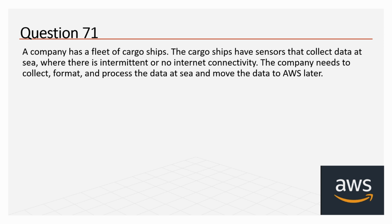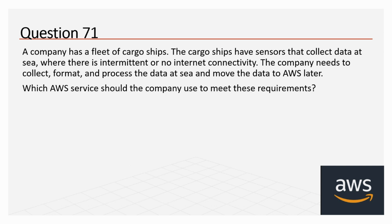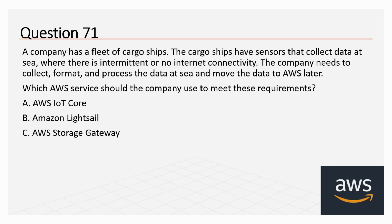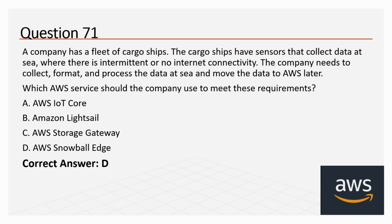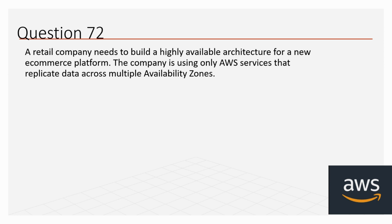Question 71: A company has a fleet of cargo ships. The cargo ships have sensors that collect data at sea where there is intermittent or no internet connectivity. The company needs to collect, format, and process the data at sea and move the data to AWS later. Options: A: AWS IoT Core, B: Amazon Lightsail, C: AWS Storage Gateway, D: AWS Snowball Edge. The correct option is D, AWS Snowball Edge.